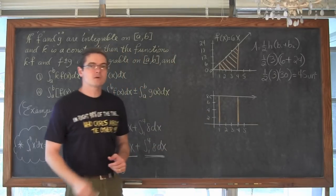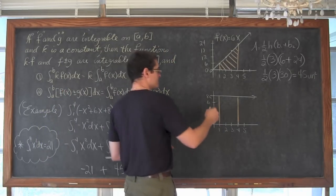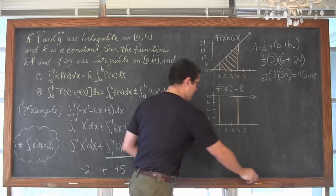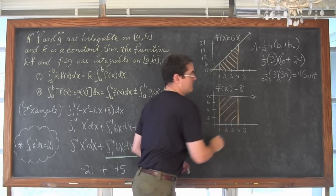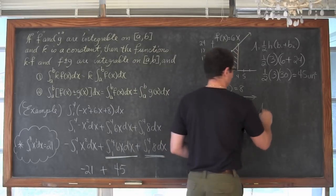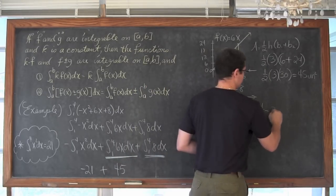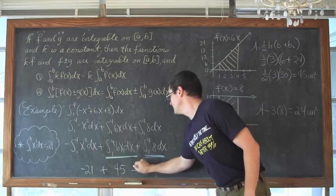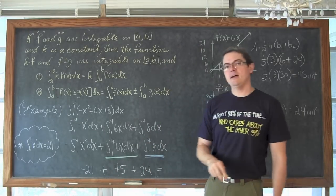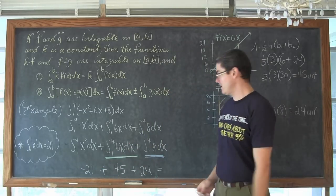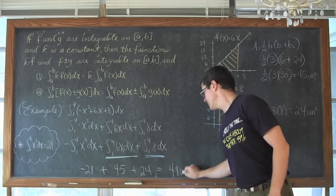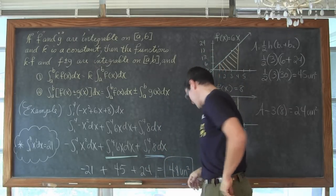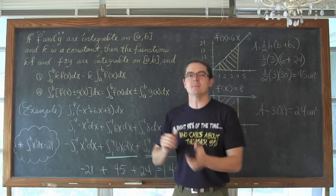And then finally, of course, our constant. F of x is equal to 8. Y equals 8 is a horizontal line. Definite integral between 1 and 4. So we are just finding the area of that rectangle which is length times width. So the area is 3 times 8, which is 24 square units since we are finding area. And what do we have? Well 24 minus 21 is 3. And 3 plus 45 is 48 square units. That is the end of my discussion about properties of definite integrals. And that means it is time for me to get out of here. I am Mr. Tarrou. Go do your homework.